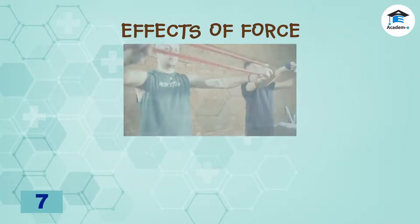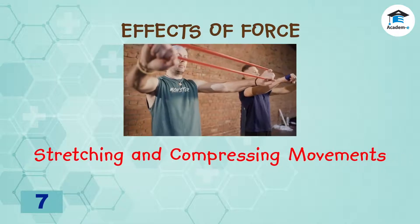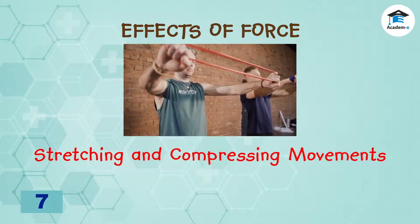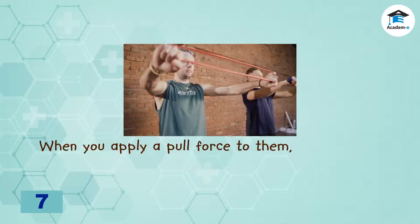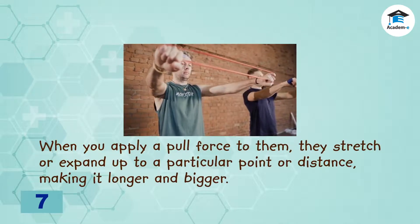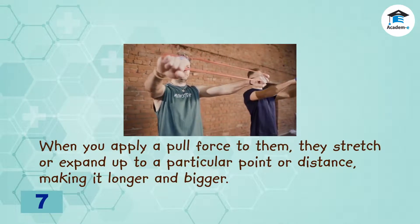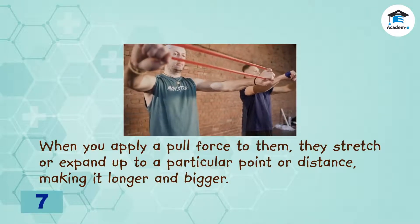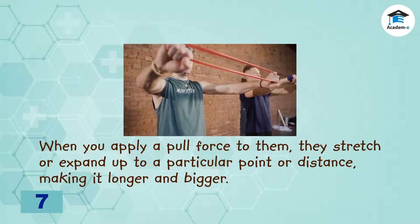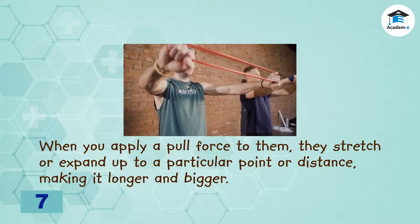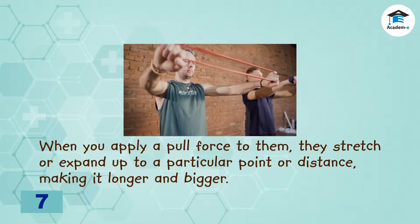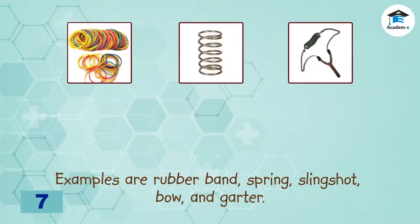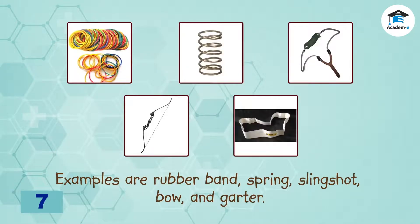A force can also make an object change its shape and size. There are objects with elastic properties. When you apply a pull force to them, they stretch or expand up to a particular point or distance, making them longer and bigger. Upon releasing them, they compress or go back to their starting point, making them shorter and smaller. Examples are rubber band, spring, slingshot, bow, and garter.